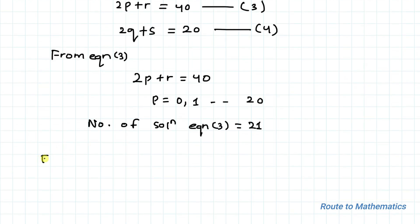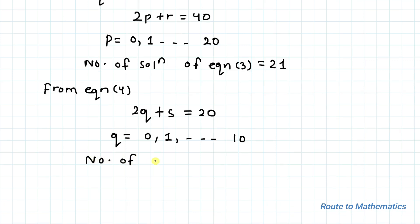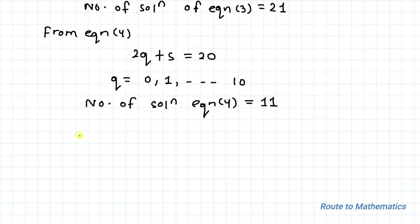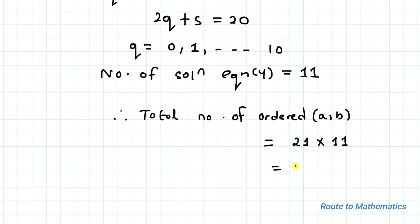Similarly, from equation 4 we have 2q + s = 20. In order to satisfy this equation, the value of q must range from 0 to 10, so the number of solutions of equation 4 is 11. Therefore, the total number of ordered pairs (a, b) equals 21 × 11 = 231, which is our answer. I hope you have understood the solution — thanks for watching, please subscribe to my channel and click the bell icon for more such interesting videos!